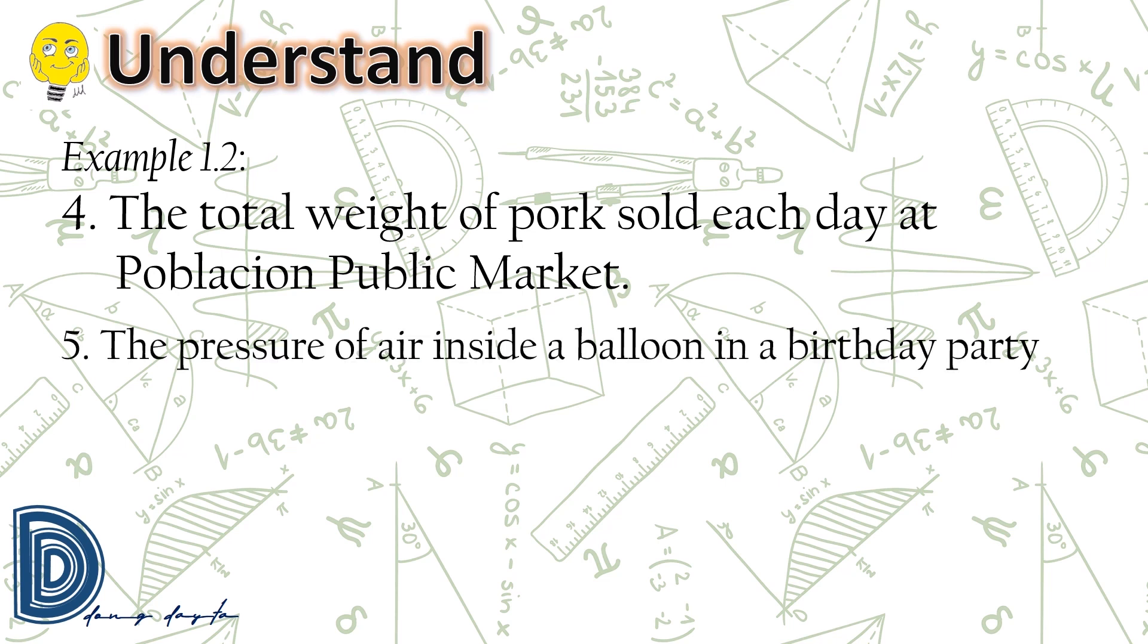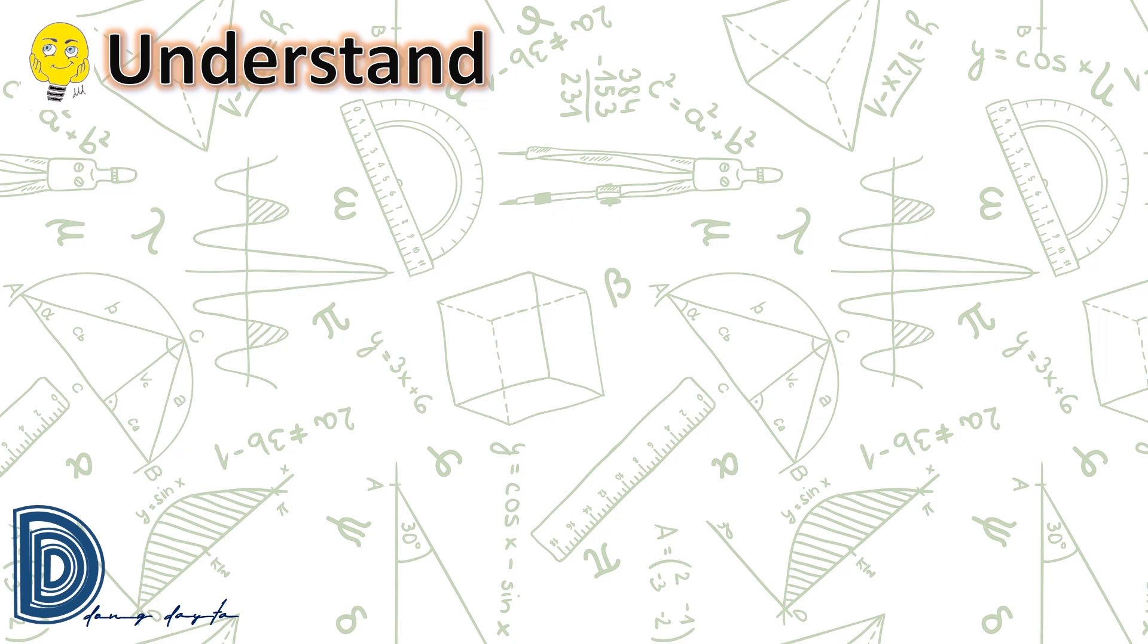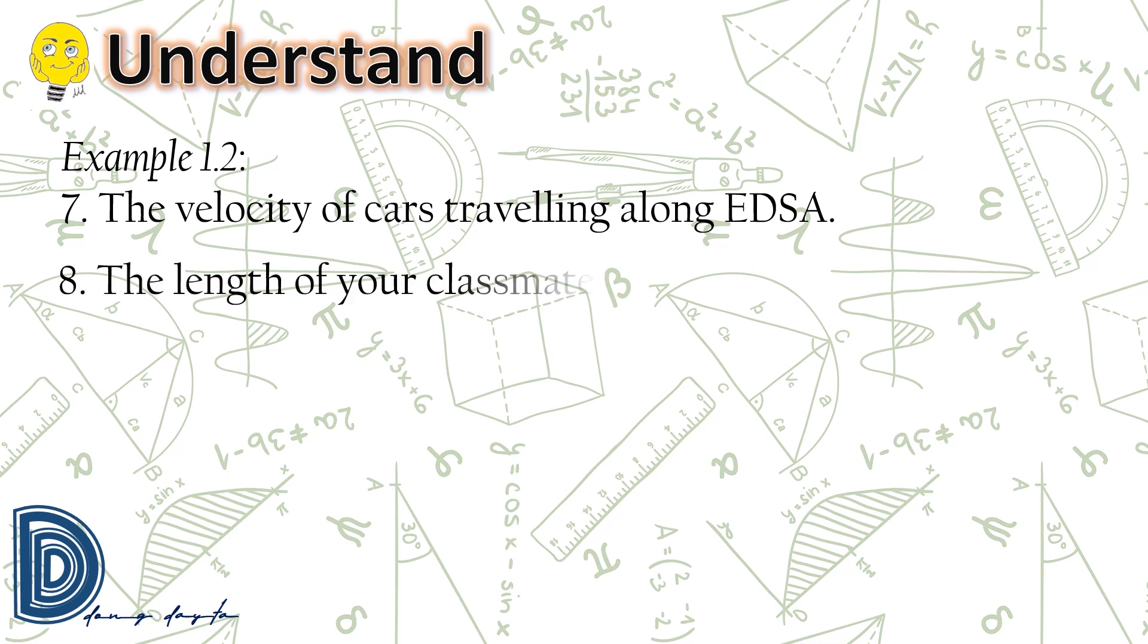The pressure of air inside the balloon in a birthday party. The amount of heat transferred from one object to another is a continuous random variable. The velocity of cars traveling along EDSA. The length of your classmate's hair. The intensity of sound is a continuous random variable.